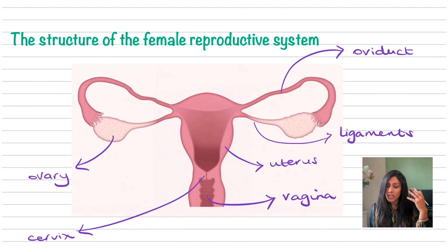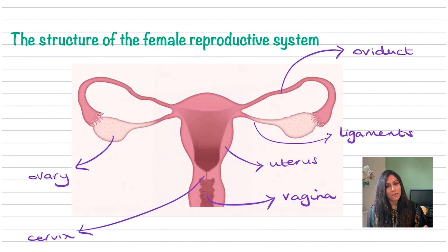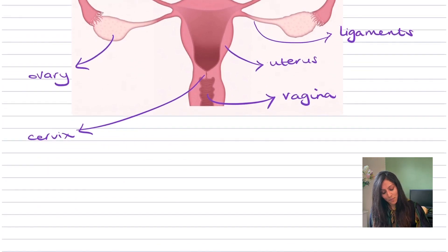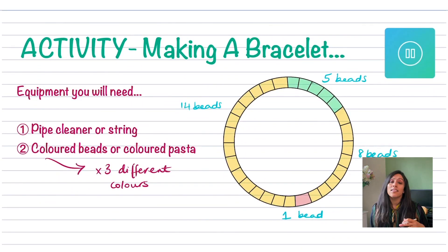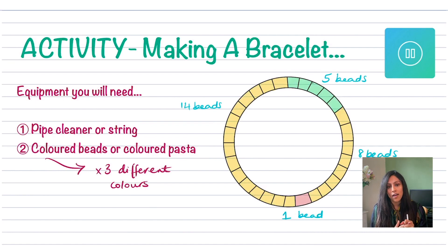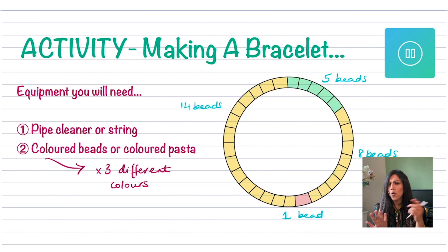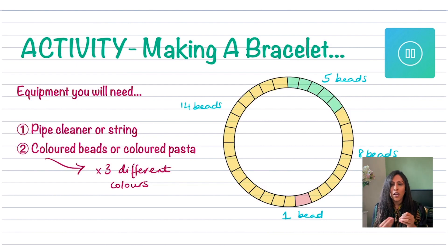You can pause this video and go through the different parts in your head so you feel confident with the anatomy. Next is an optional activity — if you have time, it won't take more than 10 minutes. You'll need a pipe cleaner or piece of string and some coloured beads — three different colours. You could also use coloured pasta or anything helpful to make a bracelet or necklace. Pause the video, go get your equipment, and come back and we'll make it together.